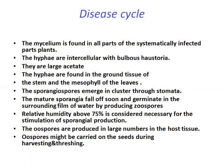The mature sporangia fall off and germinate in surrounding films of water while producing zoospores. Relative humidity above 75% is considered necessary for stimulation of sporangia production. Oospores are produced in large numbers in the host tissue and might be carried on seeds during harvesting and threshing.